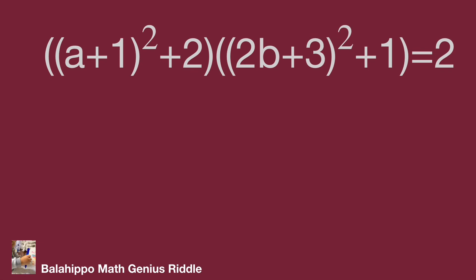Okay. Now review our new equation. [(a + 1)² + 2] multiply [(2b + 3)² + 1] equal to 2.